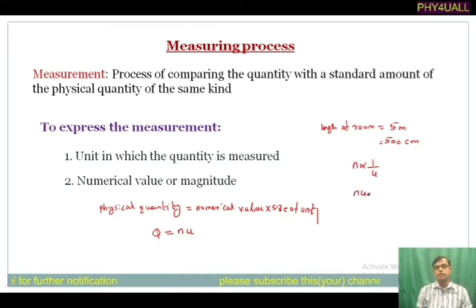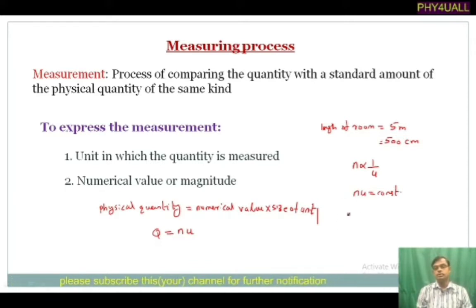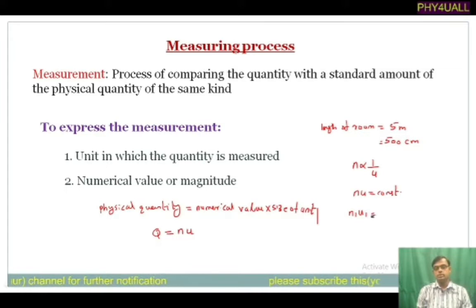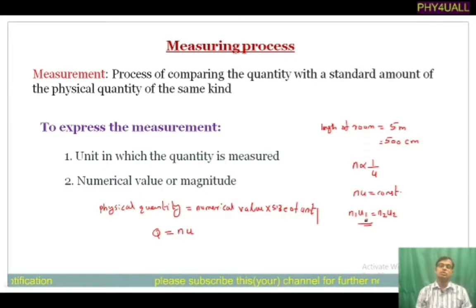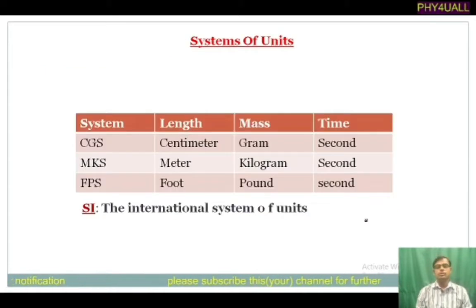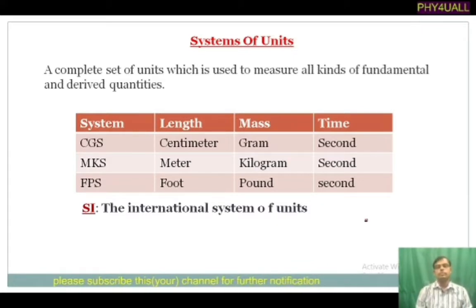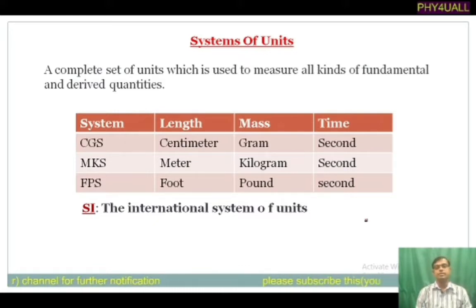We can write N times U equals constant. For comparing units, we can write N₁U₁ equals N₂U₂. This is talking about the measuring process. Moving to the next topic: system of units. A complete set of units used to measure all kinds of fundamental and derived quantities is called a system of units.